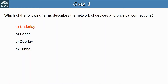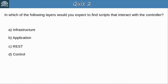Quiz question 2: In which of the following layers would you expect to find scripts that interact with a controller? The answer is B, application. In SDN architecture, the application layer includes apps and scripts that can be used to interact with the controller, which is in the control layer. The bottom layer is the infrastructure layer, which includes the network devices.